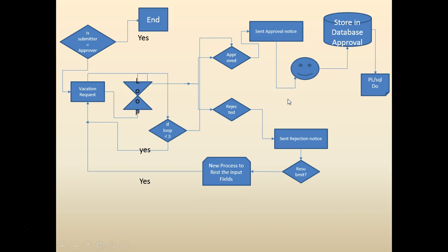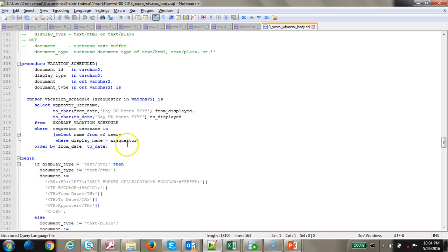We are going to build an HTML-formatted email. Let's look at the package first. This package is already installed from the previous lab — if you haven't installed it, go back to the previous lab that specifically installs the database script. Let me open the database script so we can take a look at it. This is the package body we have, and the procedure we can execute is vacation_schedule.